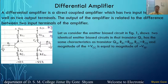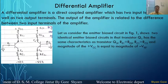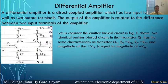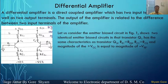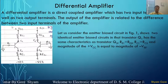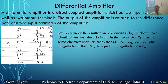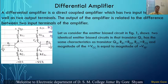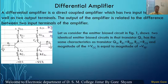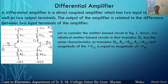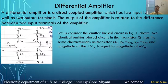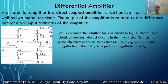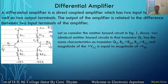Here, let us consider the common emitter amplifier. In this figure there are two common emitter amplifiers. This is the first common emitter amplifier. The power supply is plus Vcc and minus Vcc, and this resistance is Rc. This resistance is the emitter resistance, and this is the base of the transistor. Similarly, this is another common emitter amplifier.